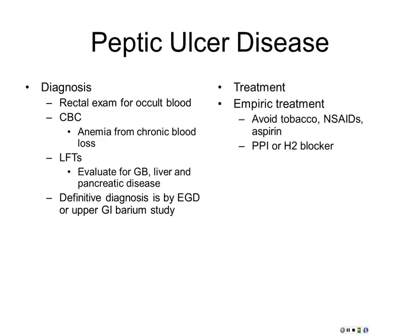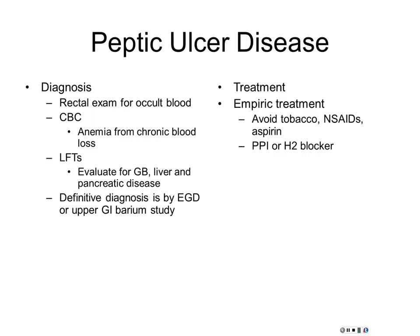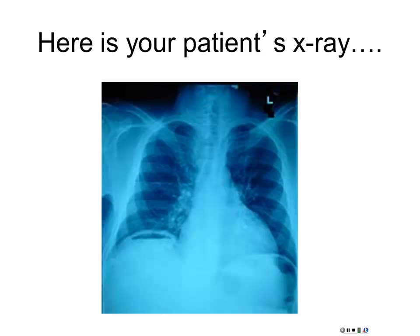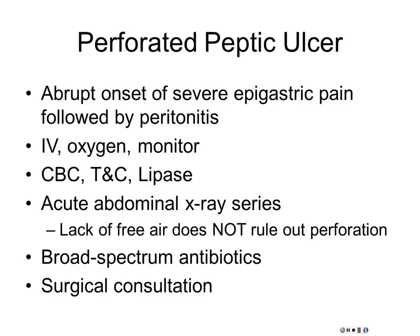The free air on this chest x-ray confirms a perforation. The thing about peptic ulcer disease is that the pain is like a light switch — they can tell you exactly when they perforated, like 2 PM yesterday. Treatment: put them on PPI drip, avoid NSAIDs, and if there's a perforation, take them to the OR and do a Graham patch — which is one of the most fun things you can do.